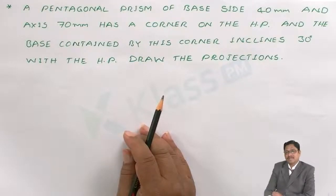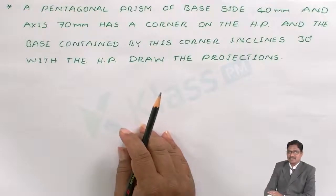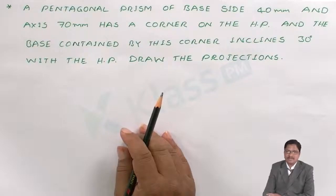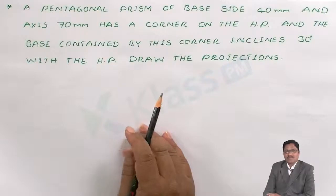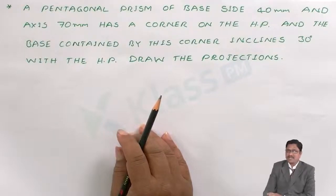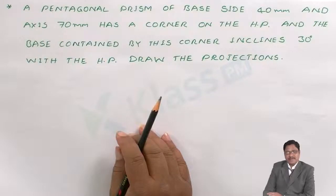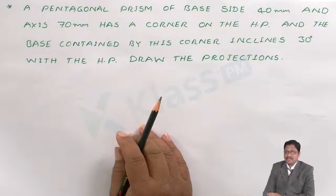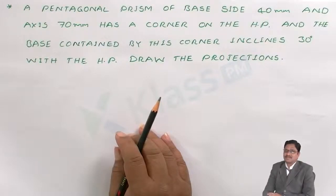So what change are you getting in this problem? The same solid as the previous problem - a pentagonal prism only - with the same dimensions of 40mm edge and height of 70mm. But the resting conditions are changed here. This is also resting in the HP, but instead of edge resting, it is corner resting. Whenever there is corner resting, the inclination is given with respect to the base angle. Whenever there is an inclination, we know that the dimensions are disturbed. In that case, how to draw the solution is very important.